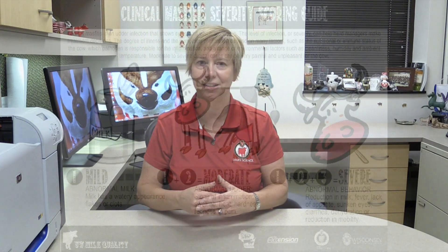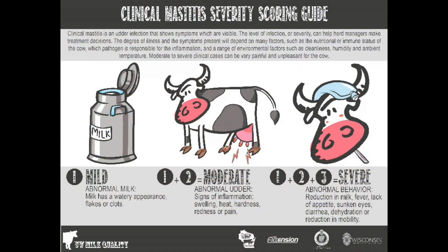The first step in implementing an on-farm culture program used for selective treatment of clinical mastitis cases is to start training the milking technicians on severity score one — mild cases, abnormal milk only — severity score two — moderate cases, abnormal milk and an abnormal udder — or to detect and treat the severity score three cases immediately.